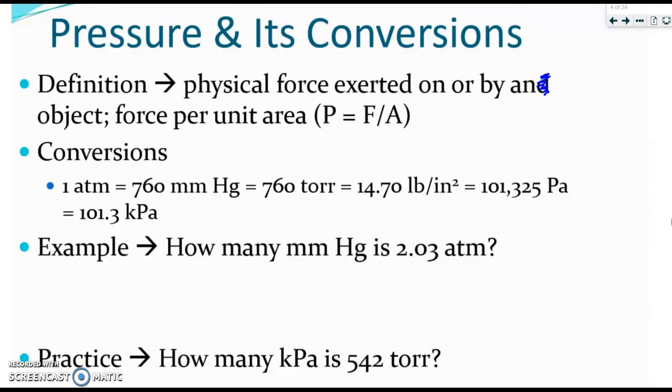Some common pressure conversions are, or common pressure units are, atmospheres (atm), millimeters of mercury (mmHg), torr, pounds per square inch, pascals, and kilopascals. We're going to use dimensional analysis here and these conversion factors to answer the questions below. These factors will be provided just as they were in previous units when we were converting things via dimensional analysis.